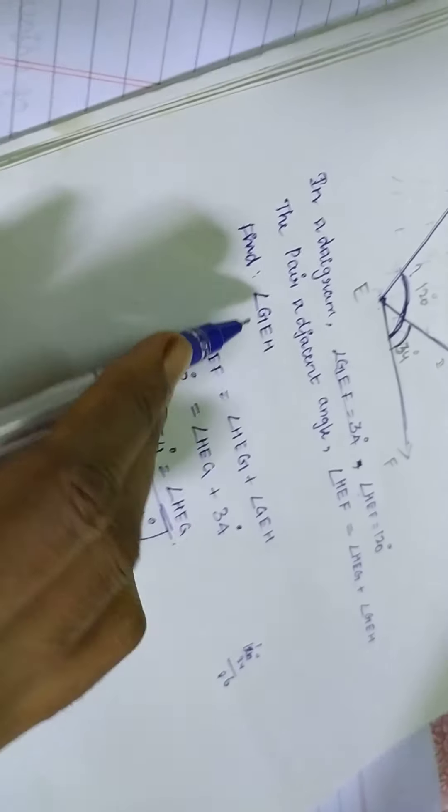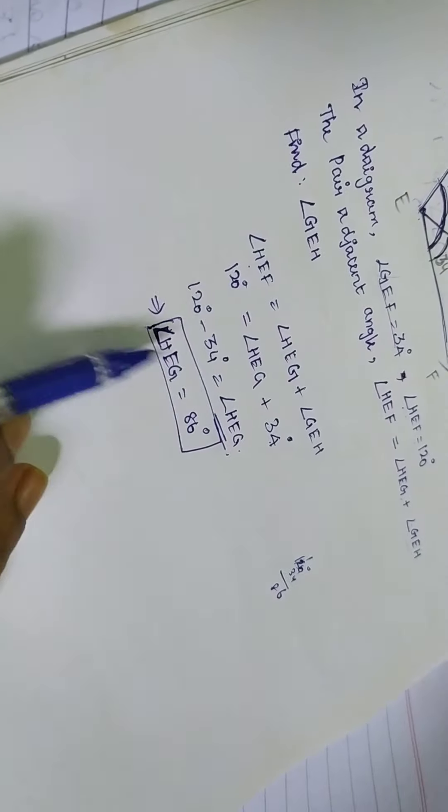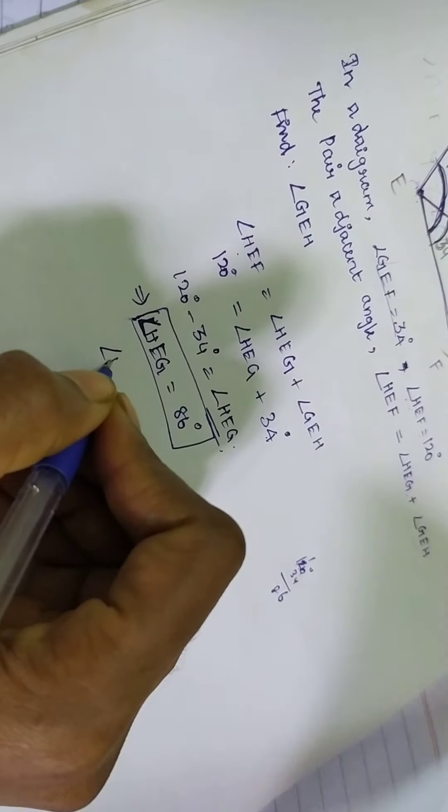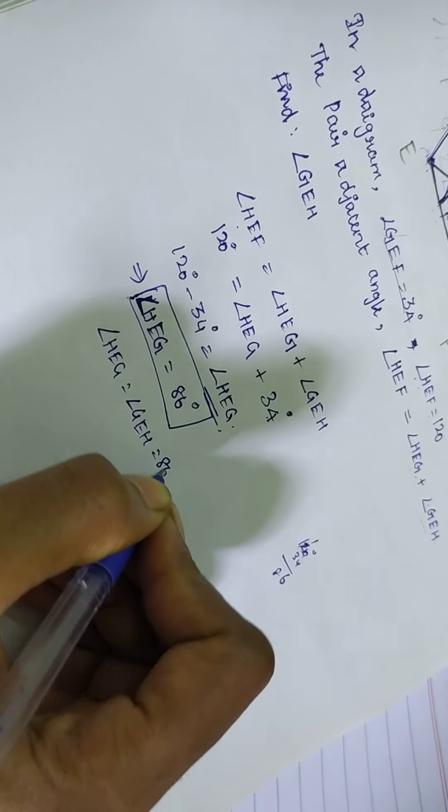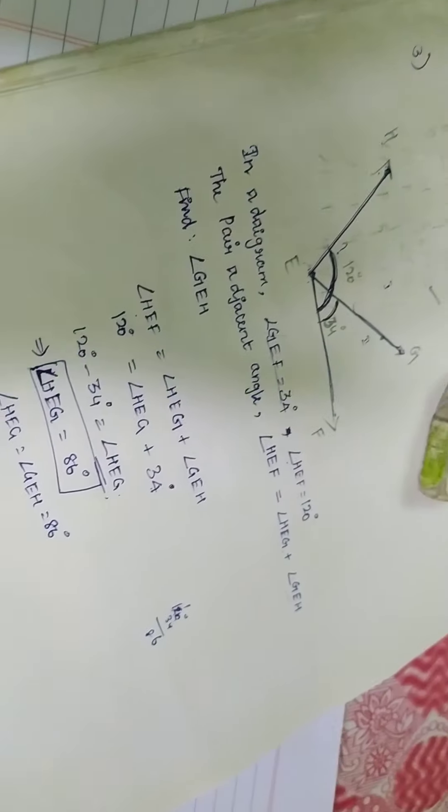So 86 degrees. That's only the asking. What is the angle of G E H and H E F. Same only. Angle H E G is equal to angle G E F. The same only. 86 degrees. Okay.